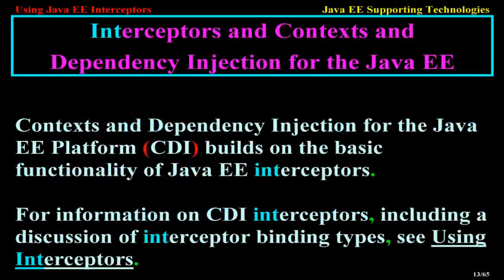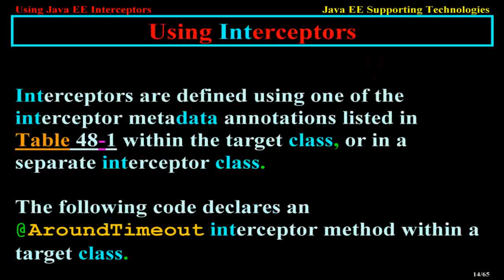Interceptors and Contexts and Dependency Injection for the Java EE Platform (CDI) builds on the basic functionality of Java EE Interceptors. For information on CDI interceptors, including a discussion of interceptor binding types, see the section Using Interceptors.